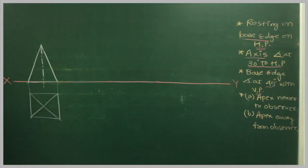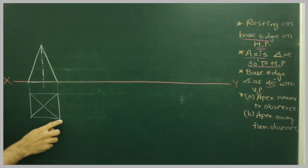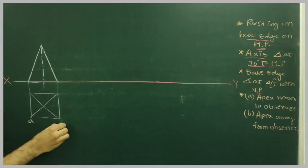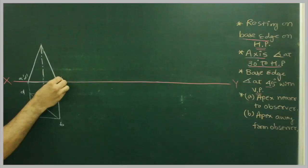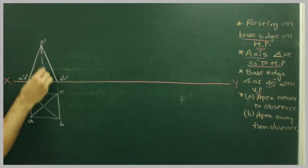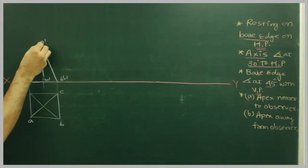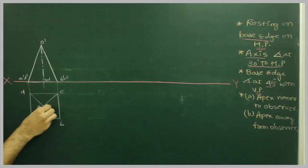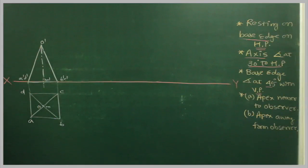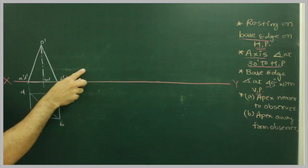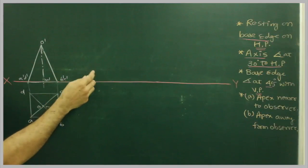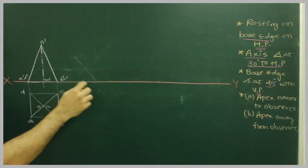We have drawn the first stage, where we have drawn a square pyramid which is resting on its base. This is the apex O-dash, M-dash with the axis. Now the third given condition: axis inclined at 30 degrees to HP. If the axis is inclined at 30 degrees to HP, then the base will be inclined at what angle? 60 degrees. So we will draw 60 degrees.